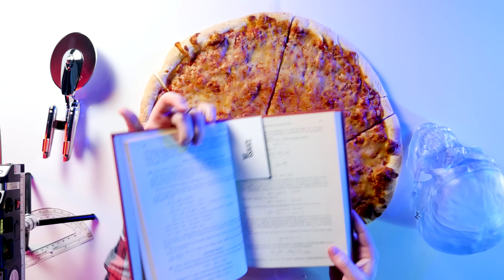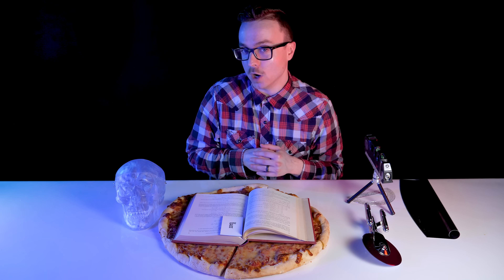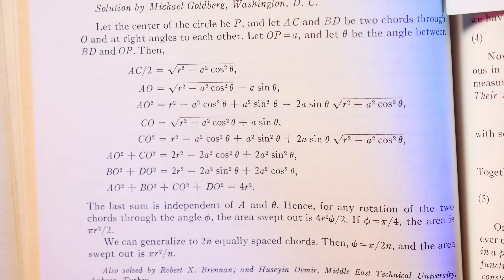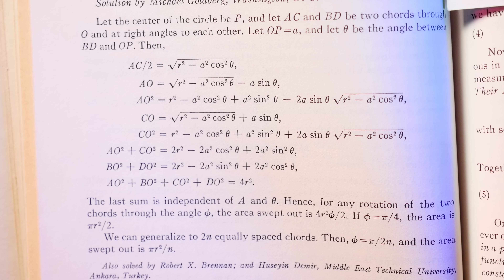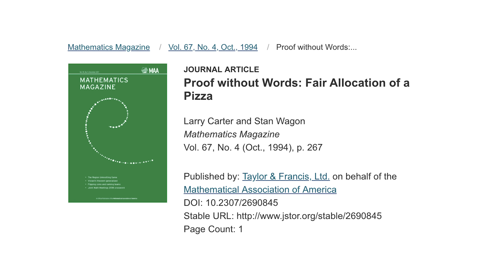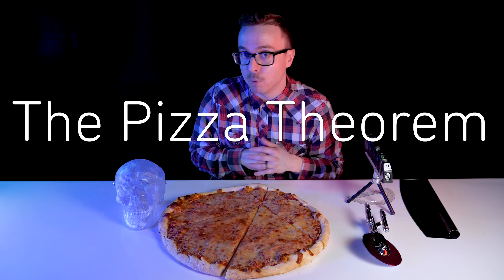Divisors of a circle was a problem proposed by LJ Upton in 1967 and solved in Volume 41 of Mathematics Magazine, challenging readers to show that alternating divisions of a circle with four lines converging on concurrent point O add up to half of the circle. Michael Goldberg solved Upton's problem without using calculus. In 1994, a follow-up piece in Mathematics Magazine explained how this problem demonstrates a fair way to split up pizza, and the pizza theorem was born.